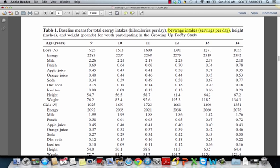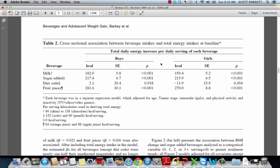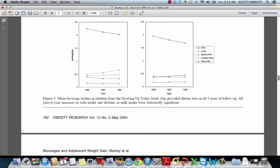Here we have table one, which is beverage servings intake per day at different age points, but they don't give you a relationship to BMI. So while all these numbers may be useful for some things and interesting for some things, they're not what we're interested in. So let's go on down. Here we have cross-sectional association of beverage intake and total energy at baseline. But we're interested in the changes over time.